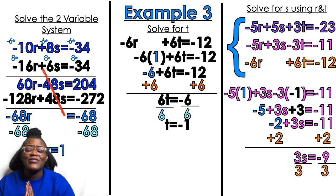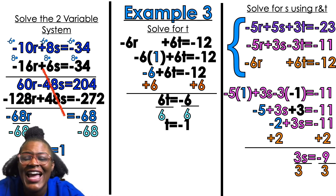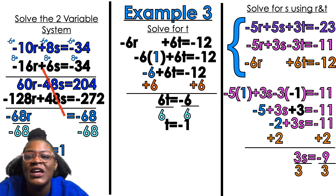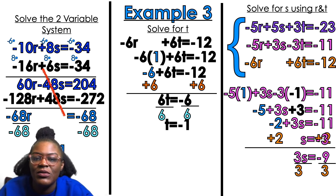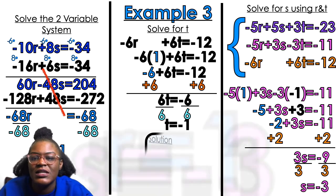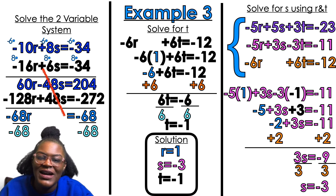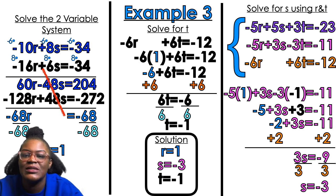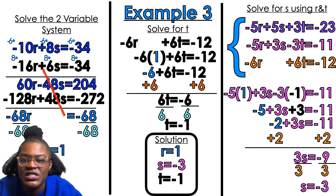Now I have all three variables: R equals 1, T equals negative 1, S equals negative 3. Those are our solutions.